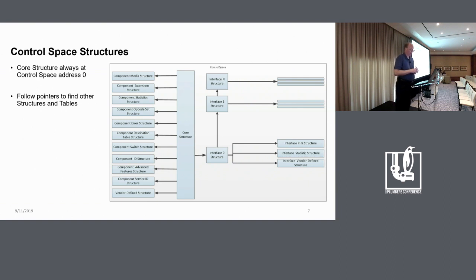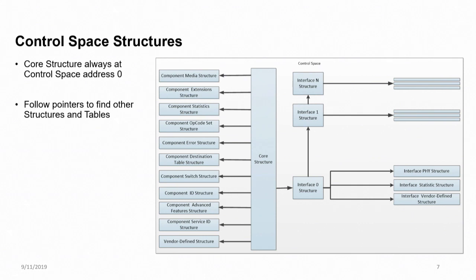Here's a picture of what control space looks like on each component. Every control space starts at zero, and there's a required structure at address zero called the core structure. And so that you start there. And inside that core structure, there will be a bunch of fields describing various things, including pointers to other structures, which describe more things about the component.